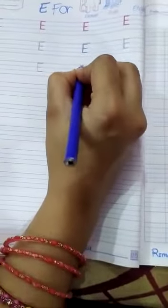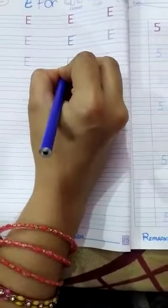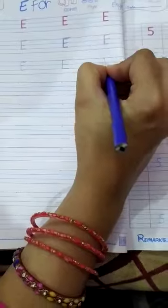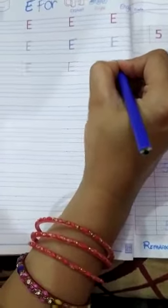Standing line. Then sleeping line, then sleeping line, then sleeping line. What will be? E. E for Elephant, E for Engine.